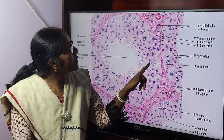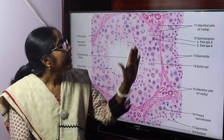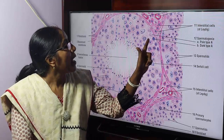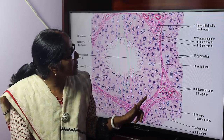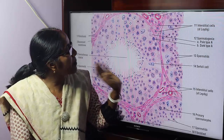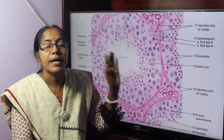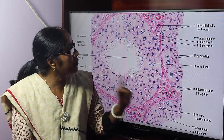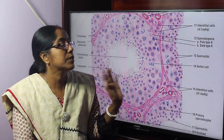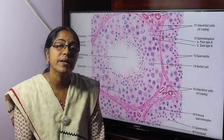The tight junctions between the Sertoli cells form the blood-testis barrier. It prevents autoimmune reaction and prevents entrance of harmful substances from the blood vessels into the lumen of the seminiferous tubules. This is all about the microscopic structure of the testes. If you have any questions, please like, share, comment, and subscribe.